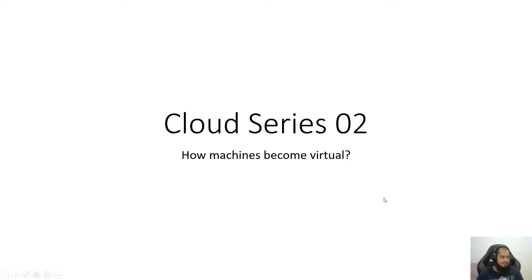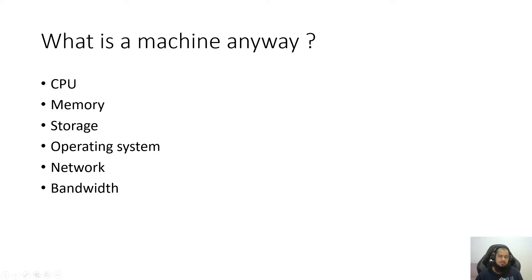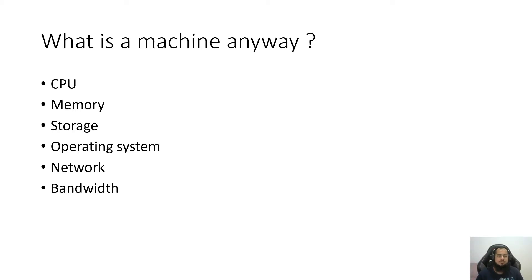The machine — where you can see the computer — it is actually a key component. When you see your computer, it has CPUs. The whole box is actually CPUs, meaning it has a processor. And what is RAM? That means memory.